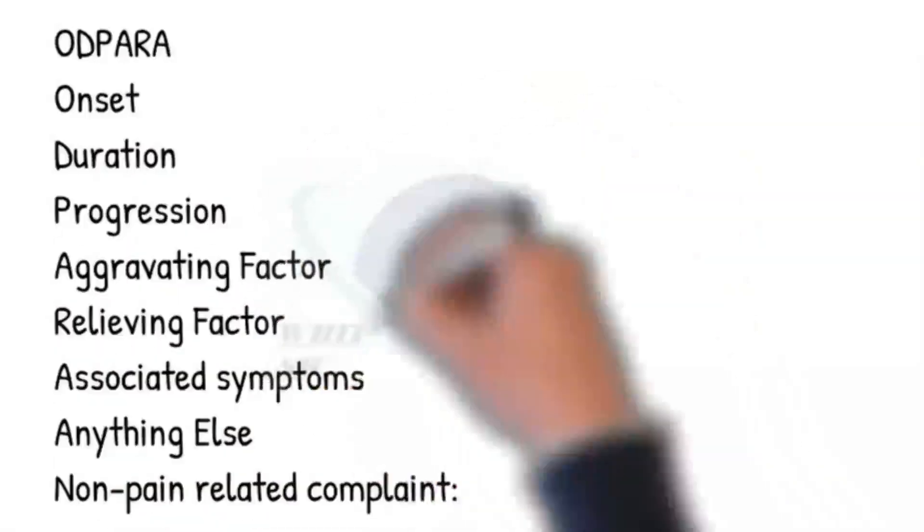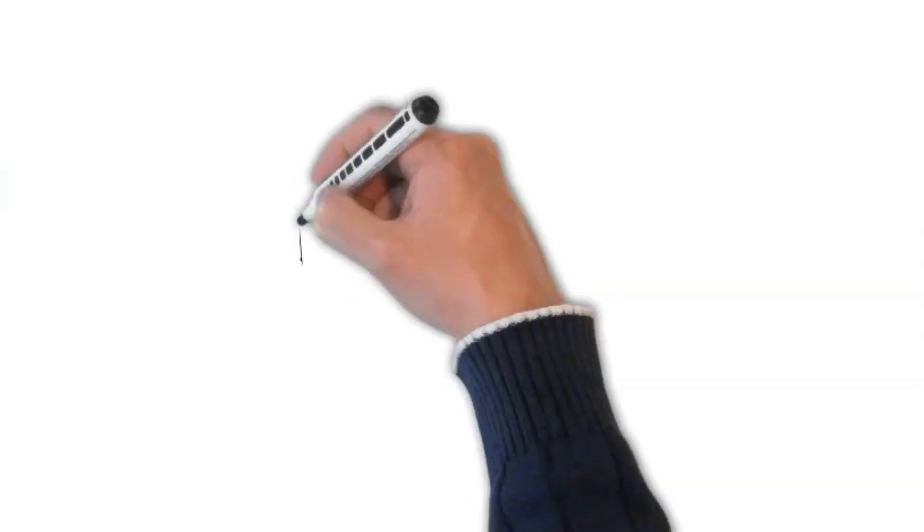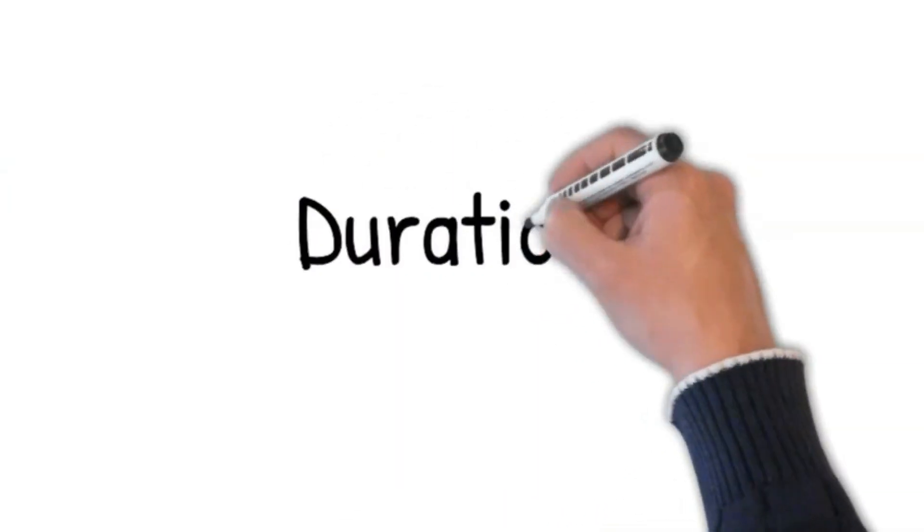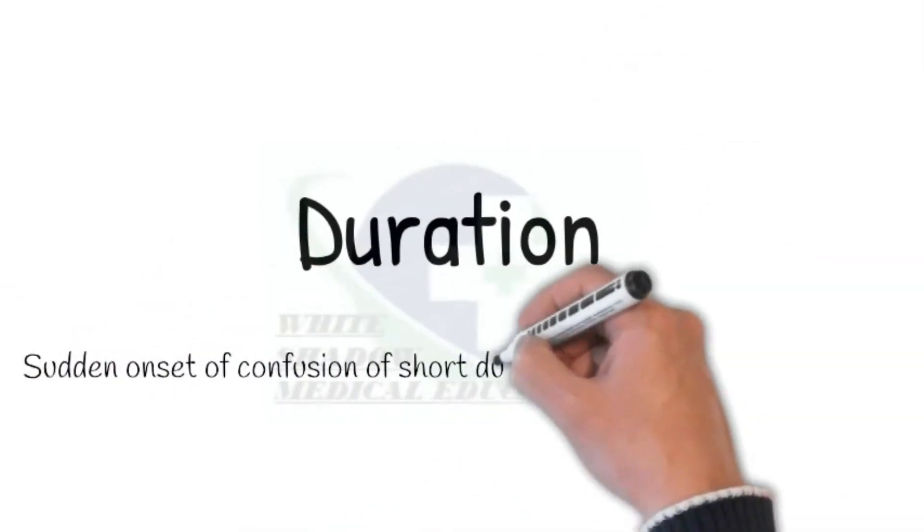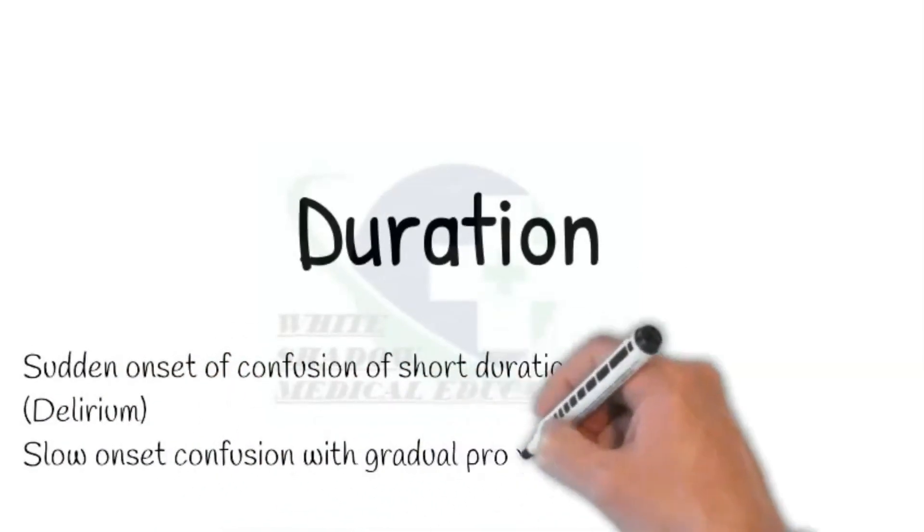Let's ask for further details using mnemonic SODHPURA. Onset: how did it start? Did it come gradually or all at once? Duration: ask how long it is present. Sudden onset of confusion of short duration is suggestive of delirium, whereas slow onset confusion with gradual progression points towards dementia.